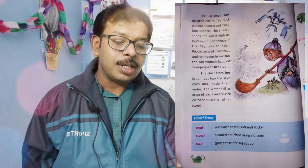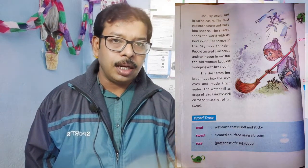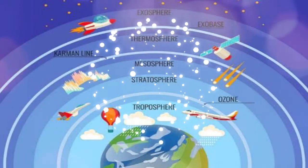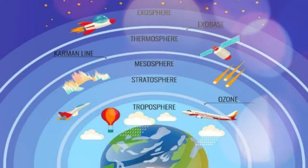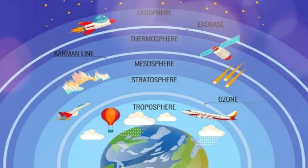The sneeze shook the world with its loud sound — the sneeze of the sky was thunder. In that time, thunder was the sneeze of the sky. People covered their heads and ran indoors in fear. But the old woman kept on sweeping with her broom. The dust from the broom got into the sky's eyes and made them water — that water fell as drops of rain.